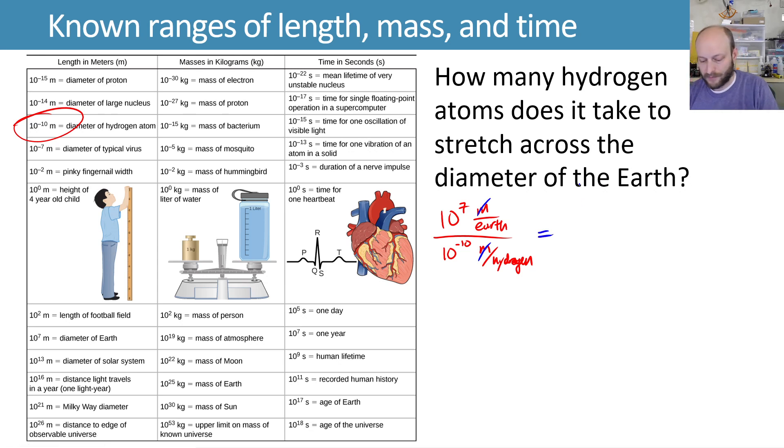All right, so number-wise, what we get is we get 10 to the 7th. Now we're dividing by a negative exponent. So when you divide by something with the same base, you can combine these exponents by saying 7 minus whatever's on the bottom. So this is 7 minus, and then on the bottom is minus 10.